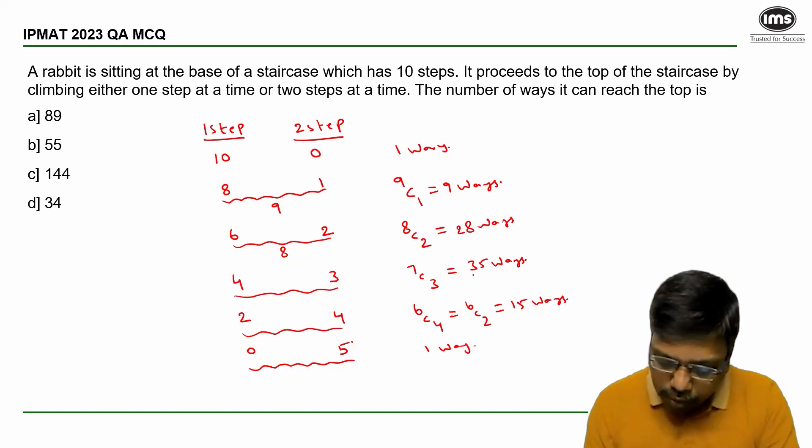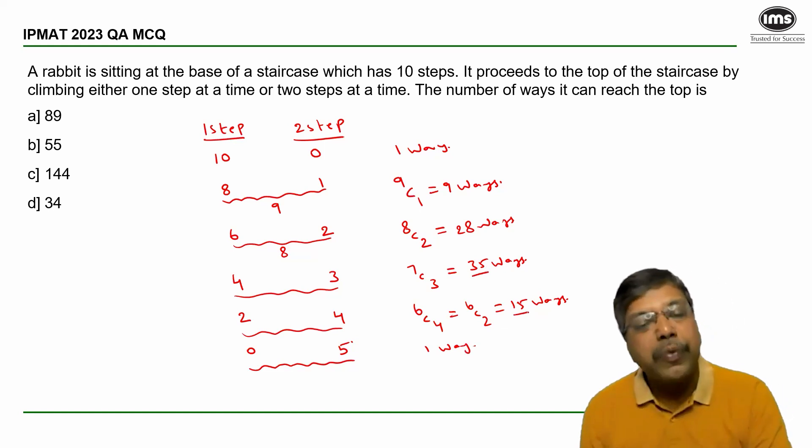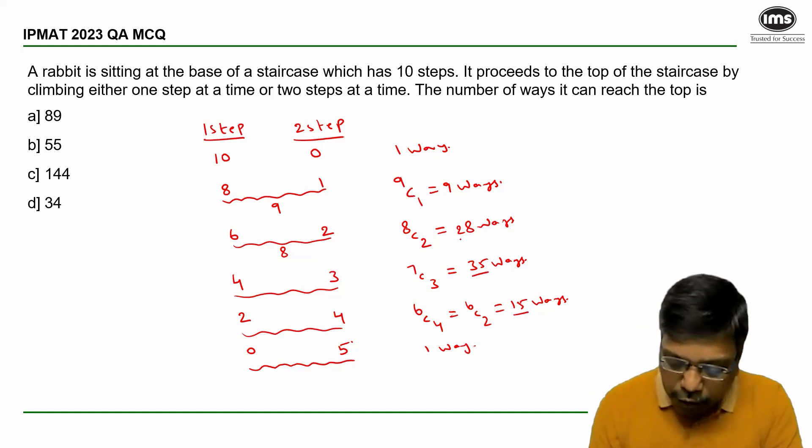Now, 35 plus 15 equals 50. 50 plus 28 equals 78. 78 plus 9 equals 87. 88, 89.